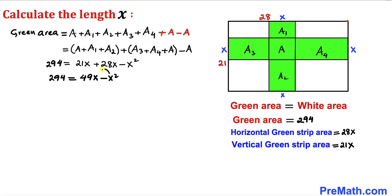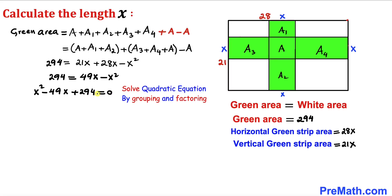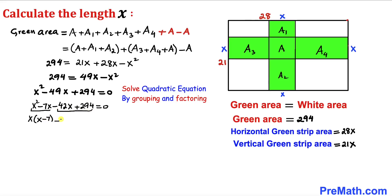Moving everything to the left-hand side gives us the quadratic equation: x² − 49x + 294 = 0. We'll solve this by grouping and factoring. I'll rewrite −49x as −7x − 42x. Factoring the first two terms gives x(x − 7), and factoring the last two terms gives −42(x − 7).